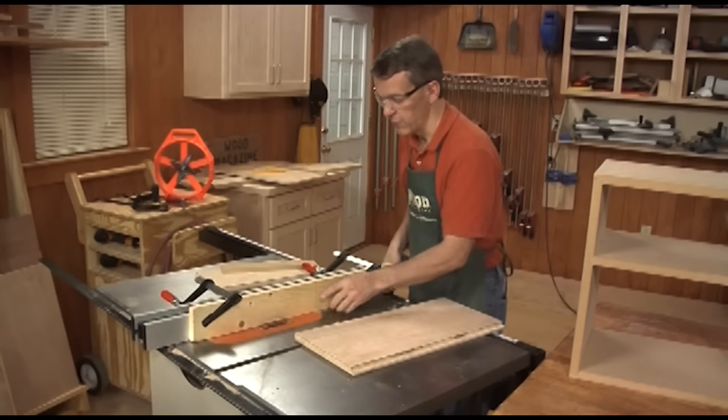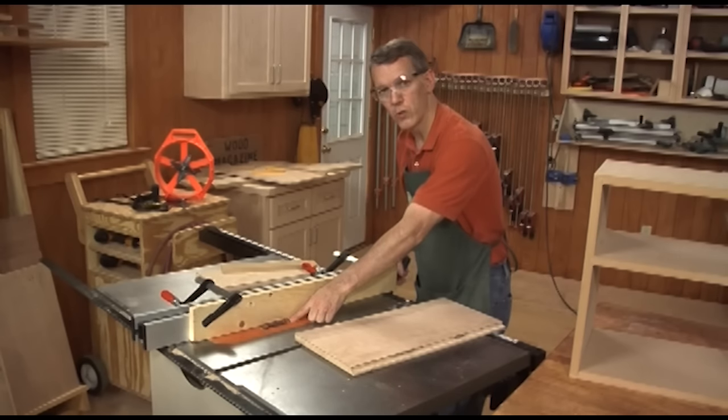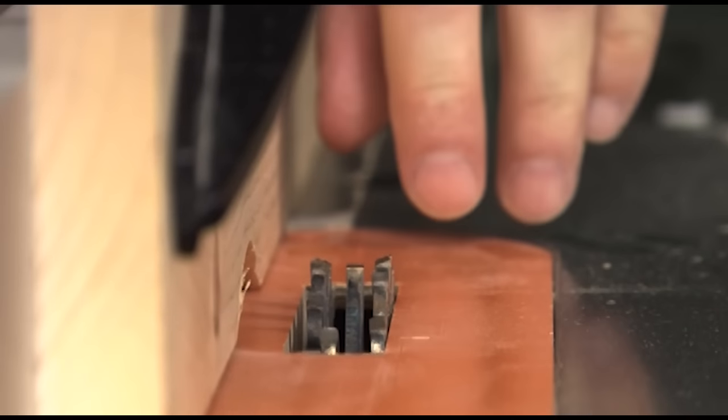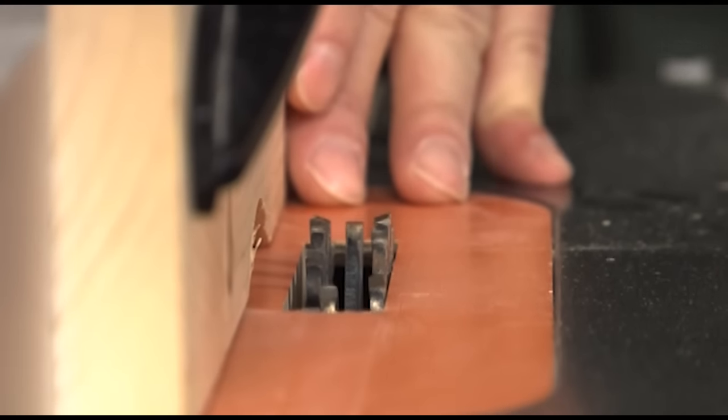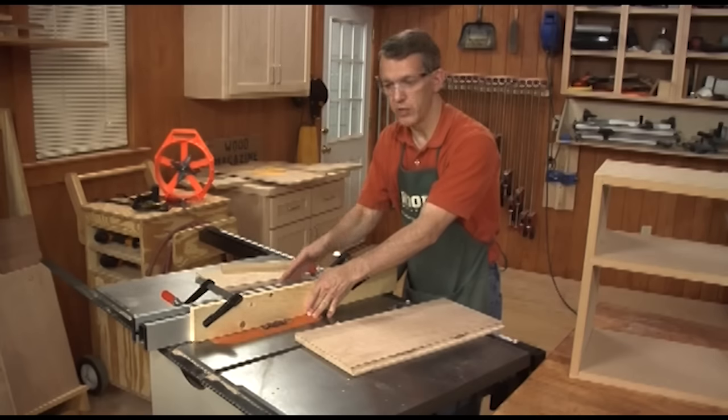You do want to be careful, though, that if you've got a blade that's about three-quarters of an inch in width, and your auxiliary fence is also three-quarters of an inch in width, you're not getting too close to your metal fence, and you cut into it.